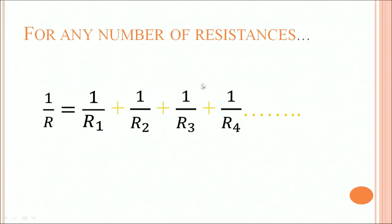This extends to any number of resistances in parallel. If R1, R2, R3, R4, etc. are connected in parallel, then 1/R = 1/R1 + 1/R2 + 1/R3 + 1/R4, and so on.